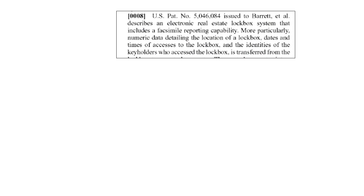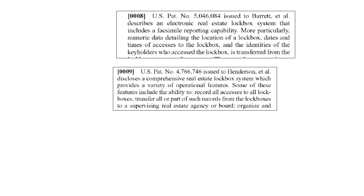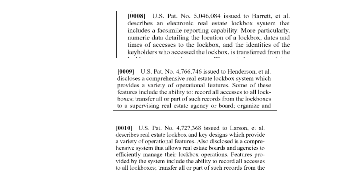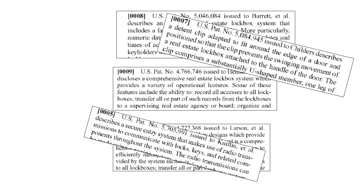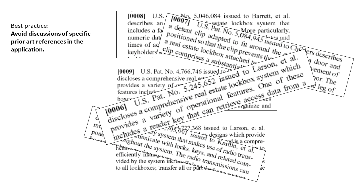Another thing this patent application did is discuss specific details of prior art patents and applications in the background. Here they are writing about a previously issued patent for a real estate lockbox, and then they also write about this one, and this one, and this one — they talk a lot about prior art in detail. The best practice is to avoid specific discussions and interpretations about what these references do and don't contain.